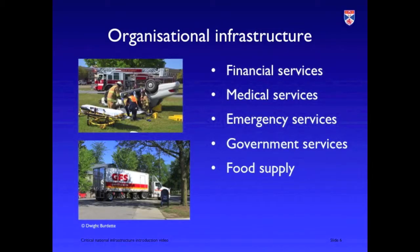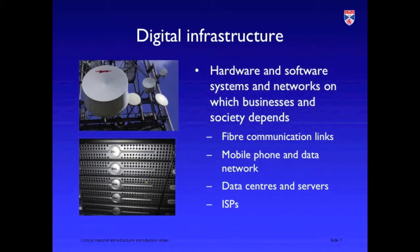Building on top of these networks, we have an organisational infrastructure. The organisational infrastructure covers financial services, medical services, government services, emergency services and food distribution and manufacturing services — so that people can be fed, they can be governed, their health can be maintained and so on and so forth.